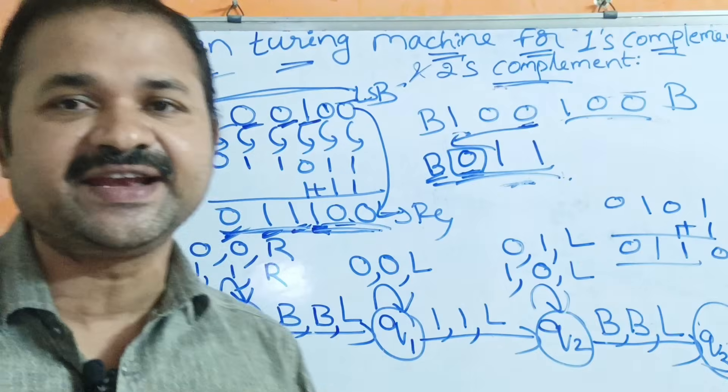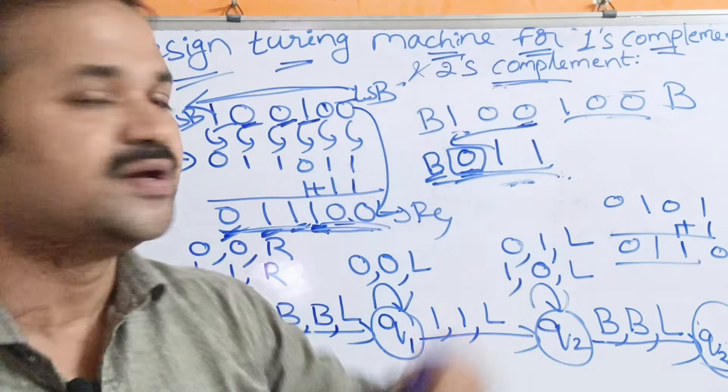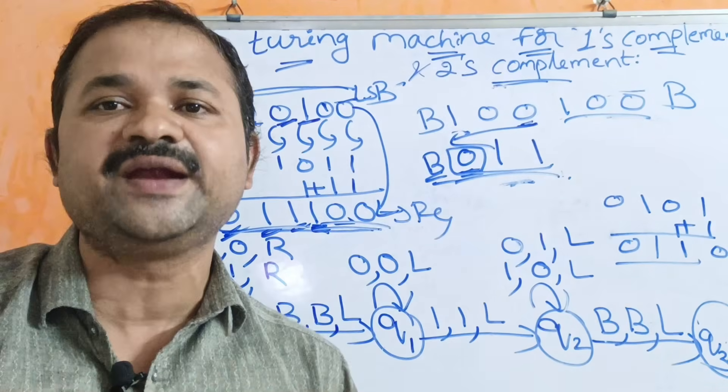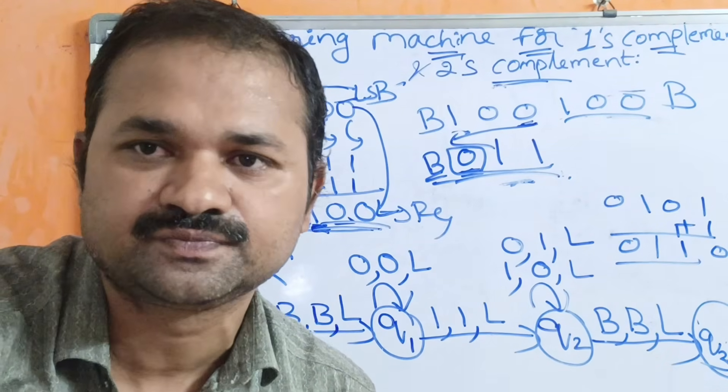In this way we can compute 2's complement and design or construct a Turing machine for 1's complement and 2's complement of a given binary number.